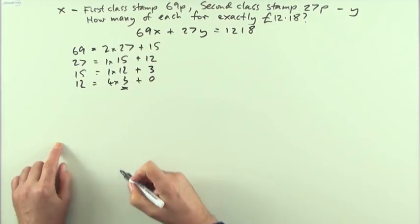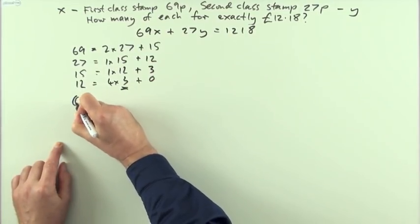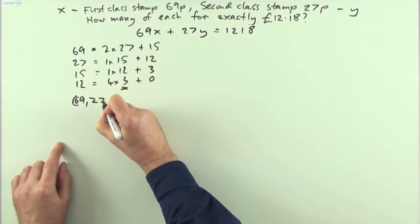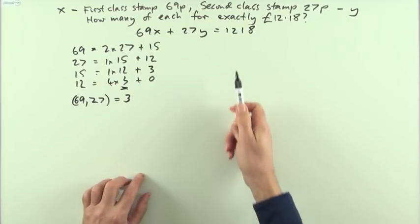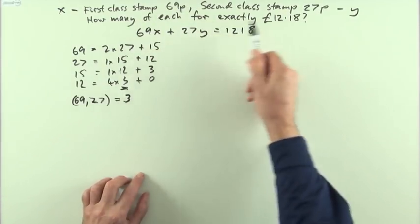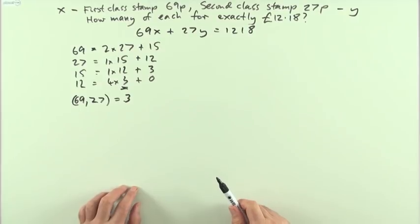That leaves me as 3 is the greatest common divisor. 69 and 27, the greatest common divisor of 69, 27 is 3, as you knew all along. The digits add up to 15, add up to 9, they divide by 3.